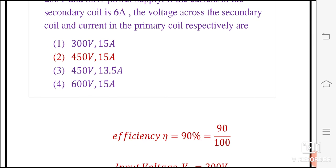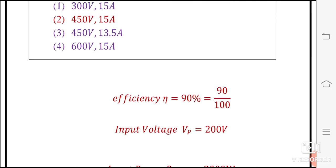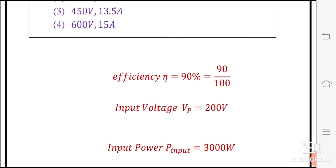So the given values are: efficiency Eta is equal to 90%, which is equal to 90 divided by 100. Input voltage VP is equal to 200 volts. Input power is equal to 3 kW, which means 3000 watts.